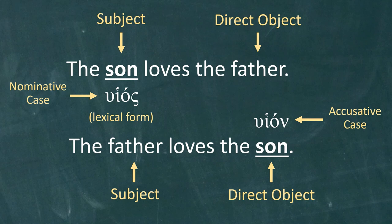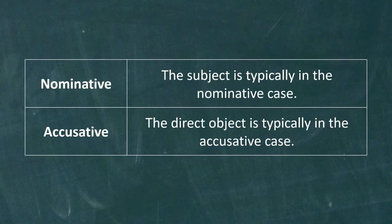Note also that the difference between huios and huion is in the ending of the word. In later lessons, we will learn how to identify the case of a word by looking at the ending. For now, however, you simply need to remember that the subject is typically in the nominative case, and the direct object is typically in the accusative case. All right, that completes this lesson, so go ahead and take the quiz to learn the content.